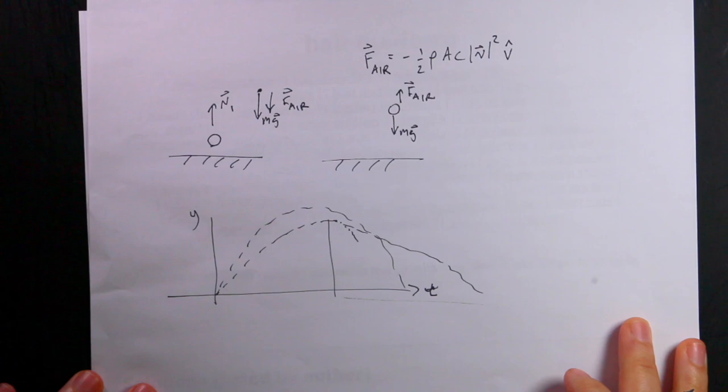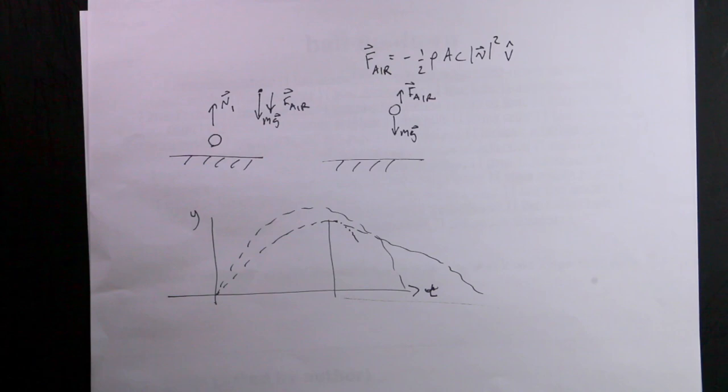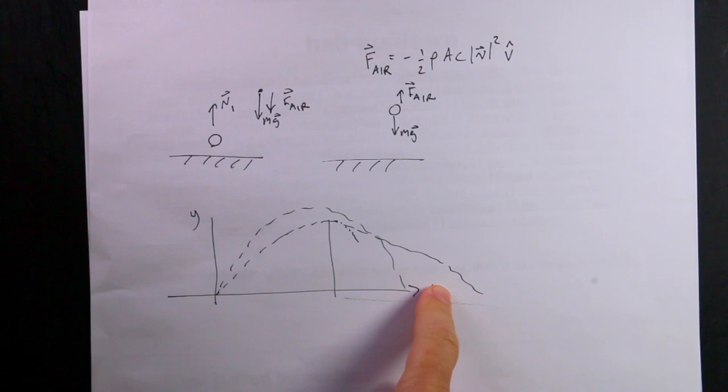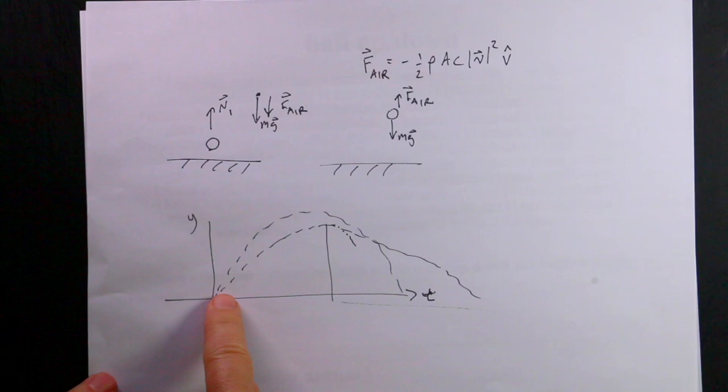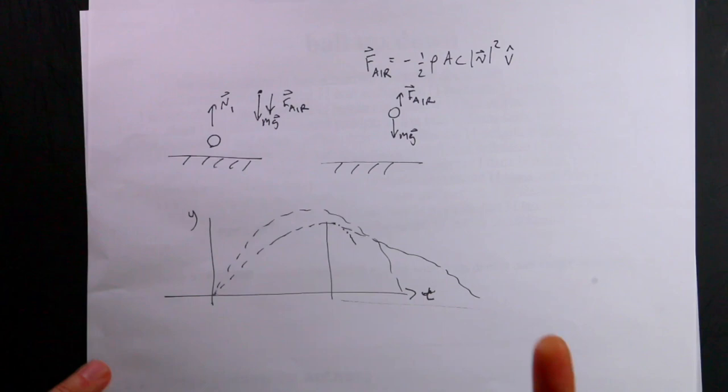We can actually answer this with Python. The Feynman lectures are really old — they didn't have accessible numerical tools like Python. I want to simulate one particular case and explore different scenarios: make a ball, throw it in the air with air resistance, make the trajectory plot, and see whether it takes longer to go up or down. Let's jump over to Python.